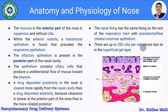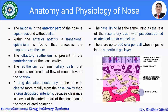The nasal lining has the same lining as the rest of the respiratory tract with a pseudostratified ciliated columnar epithelium. There are up to 200 cilia per cell whose tips lie in the superficial gel layer. In the representative structure of the nasal mucosa, the cilia are present on which the mucosal lining sits. There is the pseudostratified columnar epithelium with goblet cells responsible for production of mucus, a mixed gland, and the venous plexus in the lamina propria.